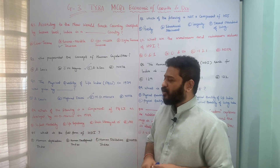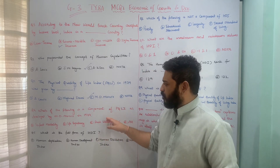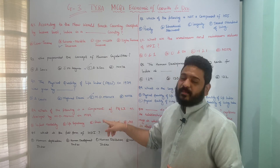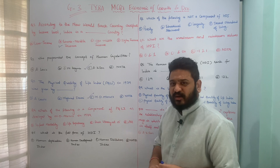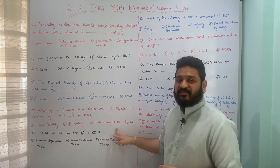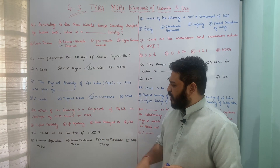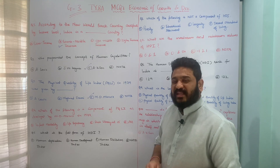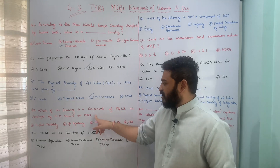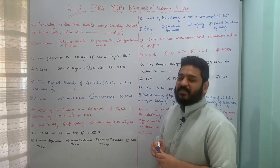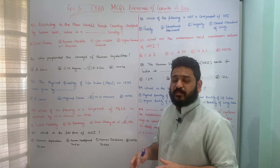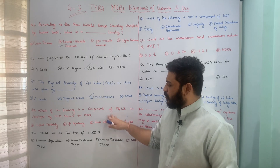The next question talks about the components of PQLI: which of the following is a component of the Physical Quality of Life Index as developed by M.D. Morris in 1979? Options are infant mortality, life expectancy, basic literacy at 15, or all of the above. All of these indicators are part of the PQLI — basic literacy at age 15, life expectancy, and infant mortality. Therefore, all of the above is the correct answer. I hope the question is clear.